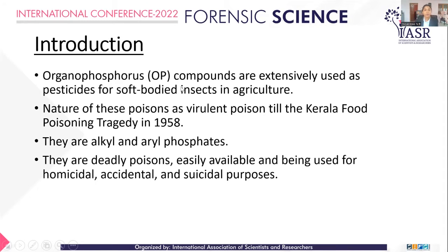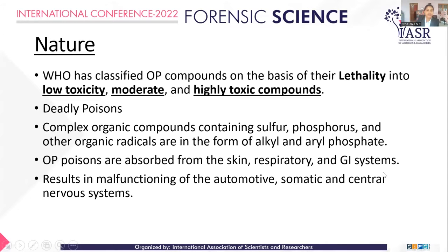OP Poisons or OP Compounds are extensively used as pesticides for soft-bodied insects in agriculture. These are insecticides which are deadly poisons and they are easily available, particularly in India. The nature of these poisons was not widely known until the Kerala food poisoning tragedy that happened in 1958. They are alkyl and aryl phosphates and are being used increasingly for homicidal, suicidal, and accidental poisoning purposes due to their easy availability.